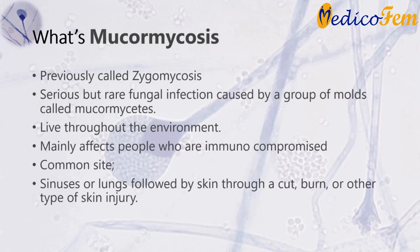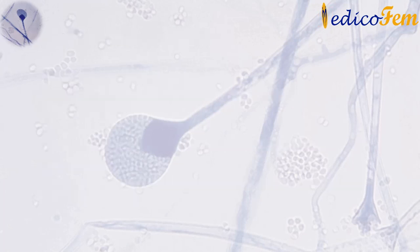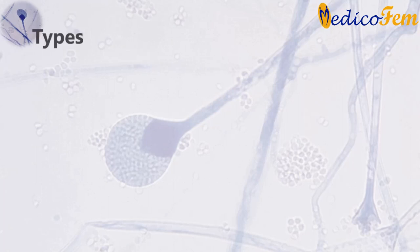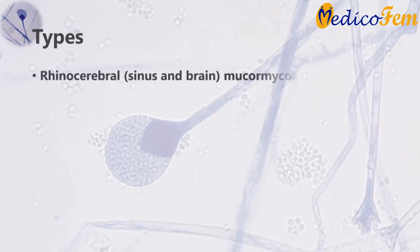It can also affect the skin after the fungus enters through a cut, burn, or other type of skin injury. However, it can occur in nearly any part of the body. There are various types of mucormycosis.